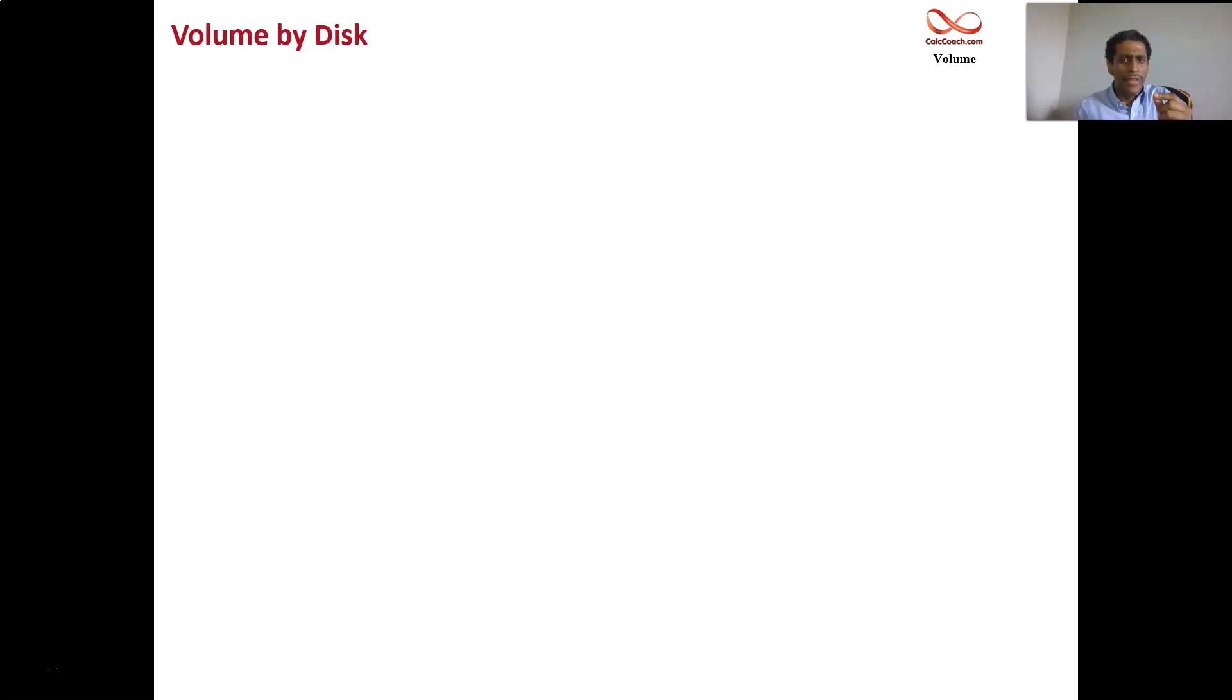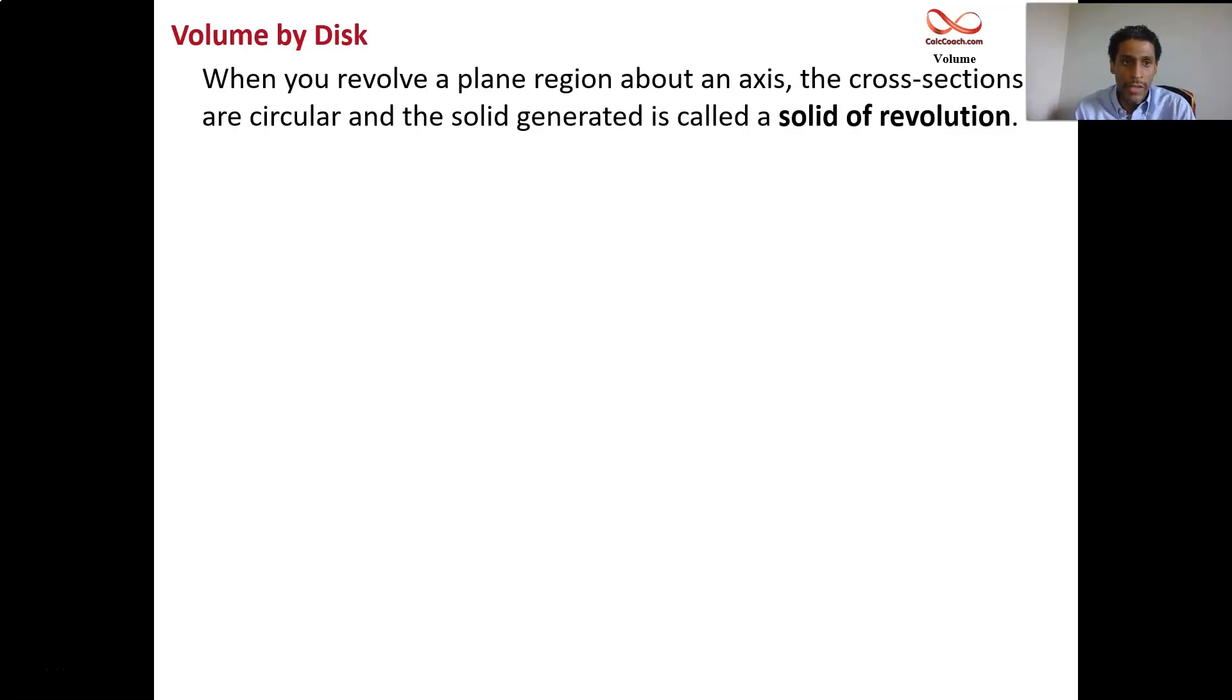This is about something that could also be considered as slicing, but I want you to view it from the framework of a volume of revolution. We're going to take a region in the xy plane and revolve it. There's going to be some region in the xy plane defined by some curves, and we're going to revolve that around some horizontal or vertical line. Based on whether or not there is a gap between the region and the axis will tell you which method you'll use: disk or washer.